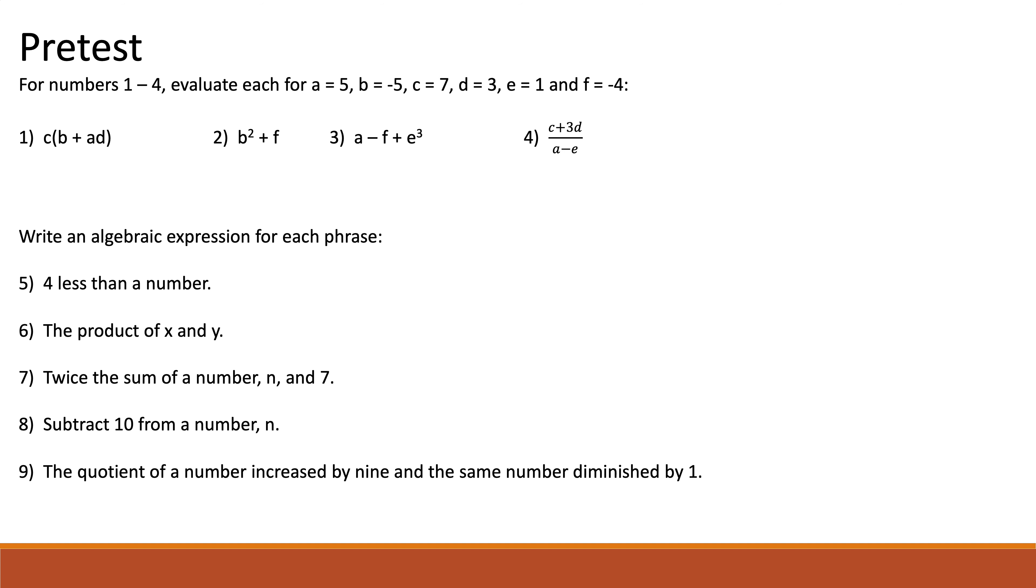And then underneath that it says 4 less than a number - I might write 4 more than a number or 8 less than a number or 7 less than a number. Product of x and y I might change to the quotient of x and y, or the quotient of a, or the product of a and b. So those are the kind of changes I make. Everything else pretty much stays in line - it's like one little tweak to each of these questions and then it's on your test.